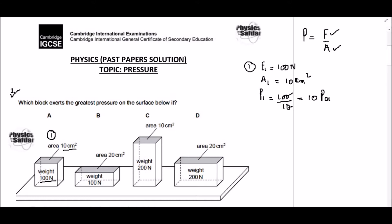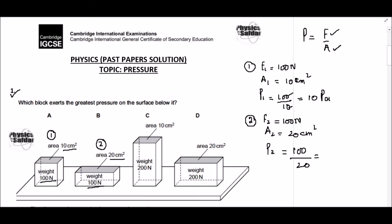When you divide 100 over 10 we get 10 Pascal. Now consider block 2: the area is 20 centimeters squared and the weight is 100 Newtons. Calculating pressure P2: F2 is 100 Newtons, A2 is 20 centimeters squared, so P2 equals 100 over 20, which gives 5 Pascal.